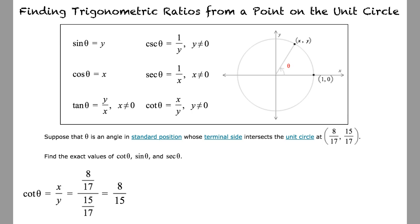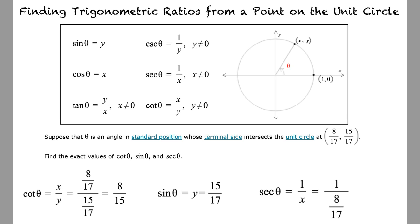To find the sine of theta, we look at the y-coordinate of the terminal point, yielding 15/17. Lastly, to find the secant of theta, we take the inverse of x, yielding 1 over (8/17), and this simplifies to 17/8.